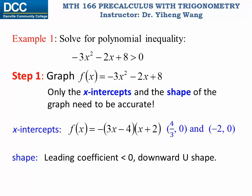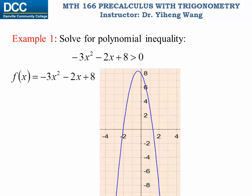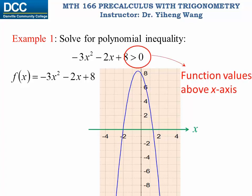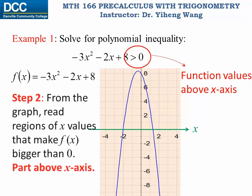With that information — that's all we need — we can sketch this graph. The x-axis is the collection of all points with a y-value of zero. Here we're looking for function values that are bigger than zero, in other words, function values that are above the x-axis. So step two is simply to read from the graph regions of x values that make the function value bigger than zero, or the part of the graph that is above the x-axis.